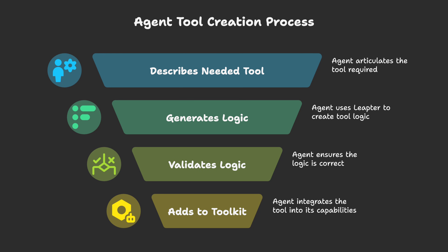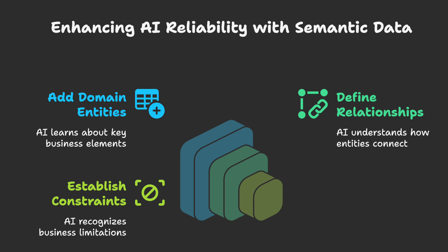Third, this unlocks non-technical experts. Your medical team can create diagnostic tools. Your finance team can create pricing models. Your operations team can create routing logic. They don't need to wait for engineering capacity — they build, test, and deploy. Fourth, we're heading toward a future where agents create their own tools. When an agent encounters a task it can't handle, in the future it will describe a tool it needs, use something like Leapter to generate the logic, validate it, and add it to its toolkit. That's true agentic autonomy. And fifth, if Leapter adds integration with semantic data layers — where you can give it knowledge of your domain entities, relationships, and constraints — this becomes the ultimate tool for reliable AI. The logic wouldn't just follow rules you write; it would understand your business model.